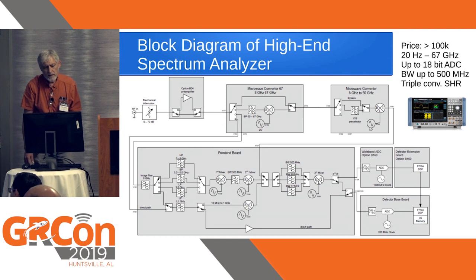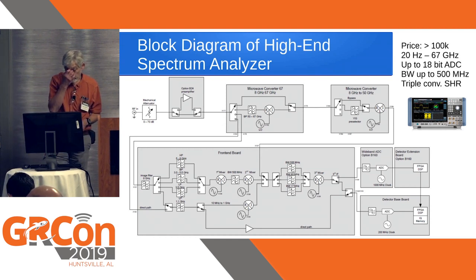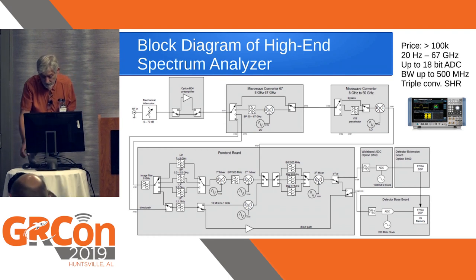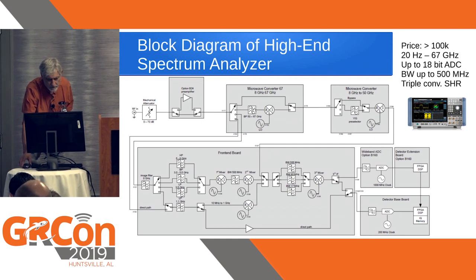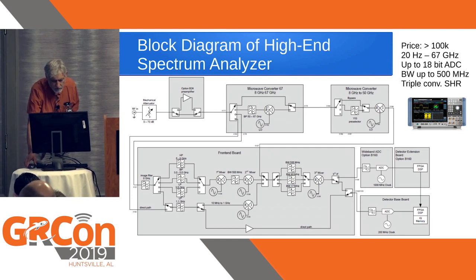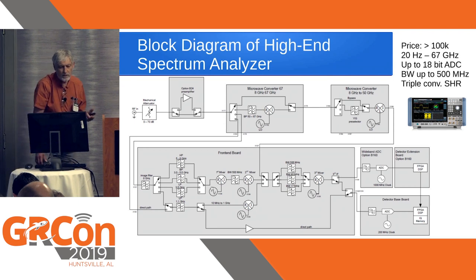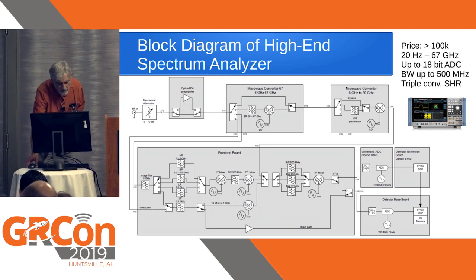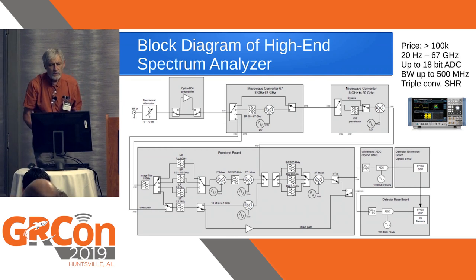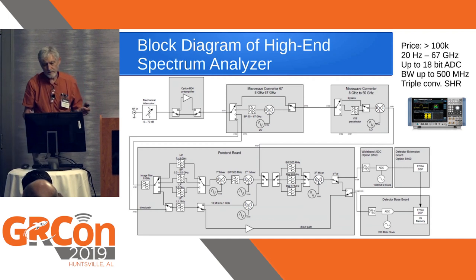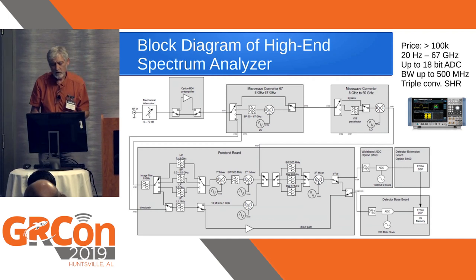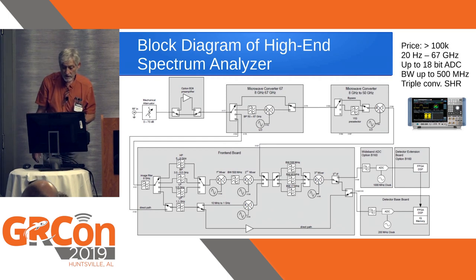Here is a block diagram of a modern spectrum analyzer — the 100K+ kind. You can see there are multiple filters, multiple local oscillators, and three stages of mixing — a triple-conversion superheterodyne receiver. There is a filter bank with four filters and another with three filters. All those filters are very large, expensive, and time-consuming to adjust, which is why it costs over $100K.